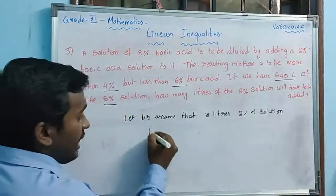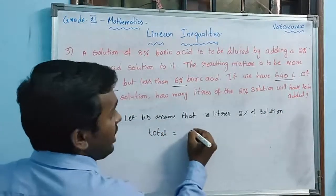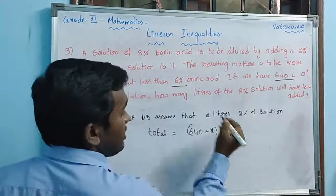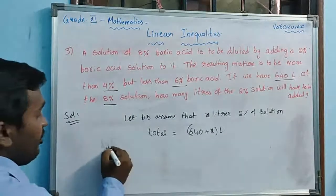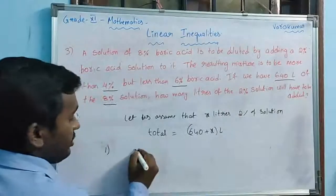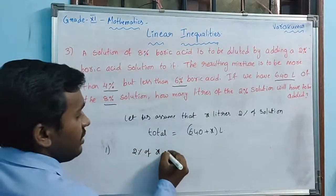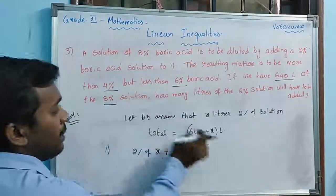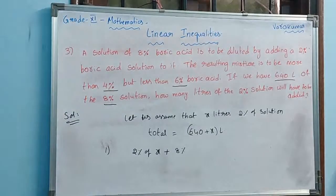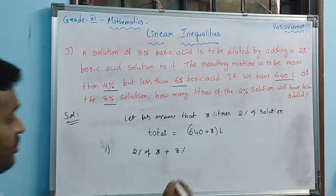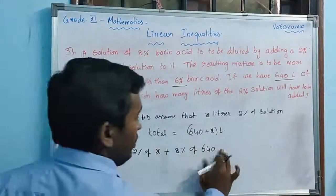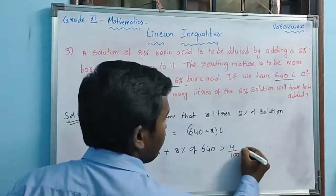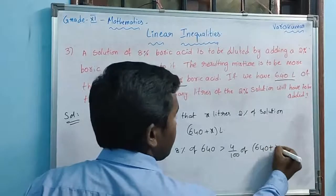The total quantity becomes 640 plus x liters. Now, what are the conditions given? Condition number one: if you add x liters of 2% — so 2% of x plus 8% of 640 liters — the resultant should be more than 4% of (640 plus x). This is condition number one.